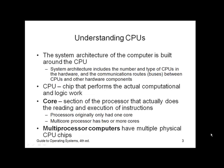First and foremost, let's talk about CPUs. The whole system architecture of a computer in general is built around the CPU. When we talk about system architecture, we're talking about the number and type of CPUs in the hardware, all of the communication routes — or buses — between the CPUs and other hardware components. Systems can have multiple processors; we generally refer to these as multiprocessor computers, meaning they have multiple physical CPU chips within the system itself.